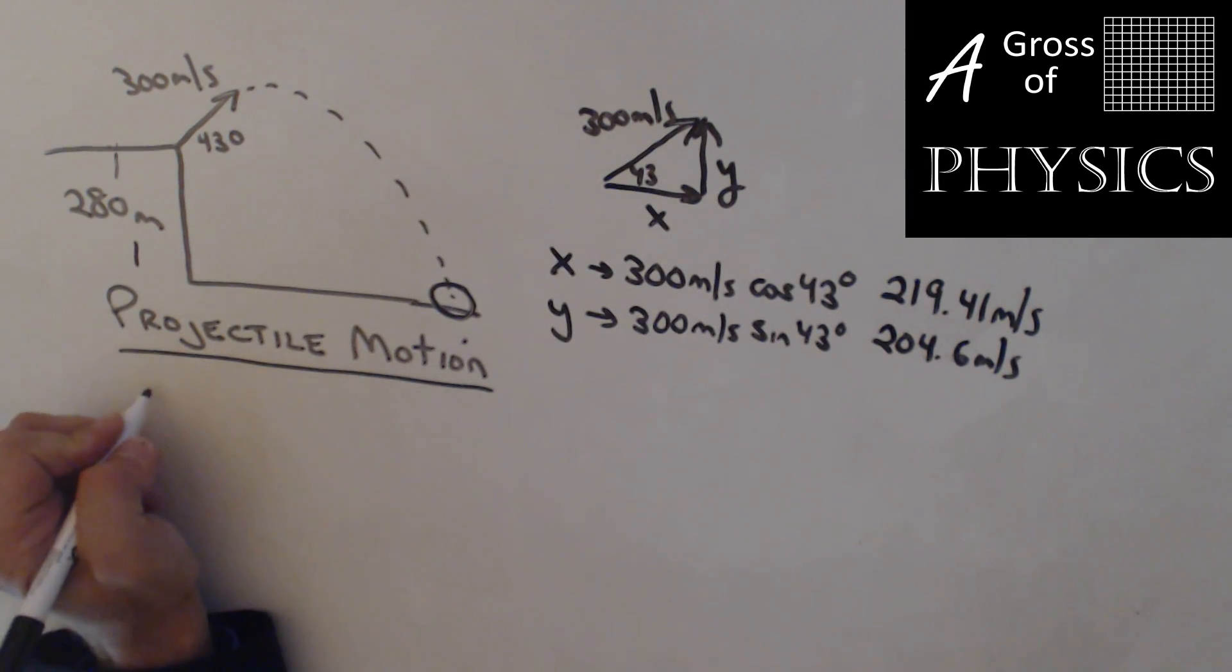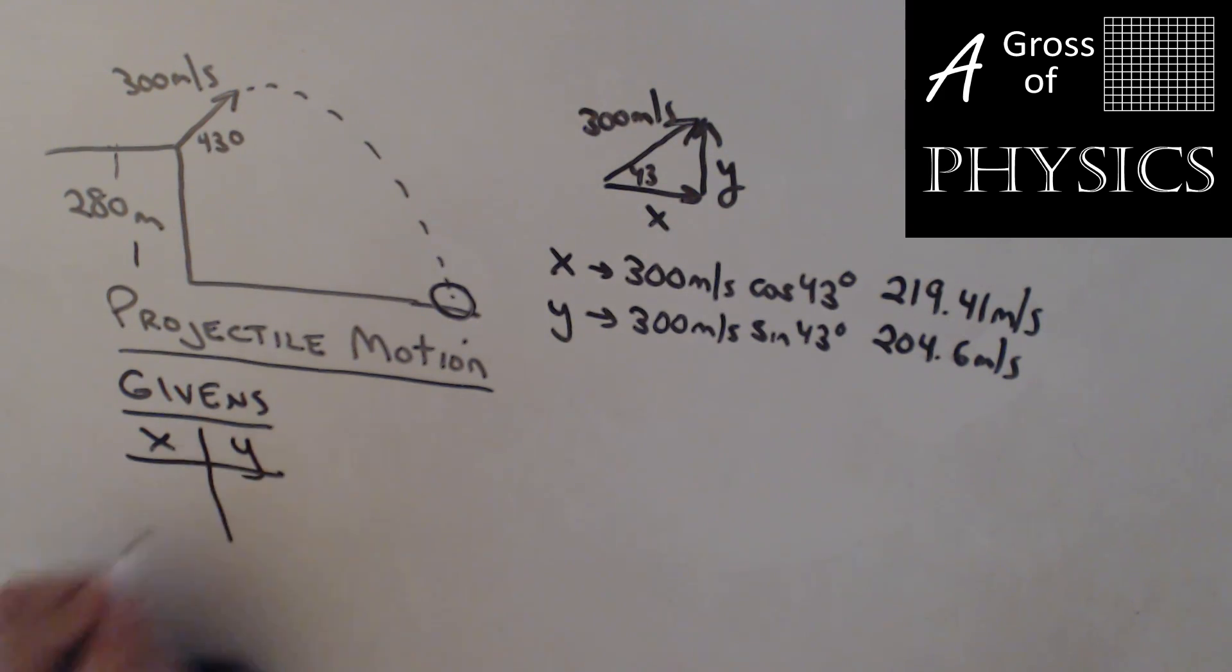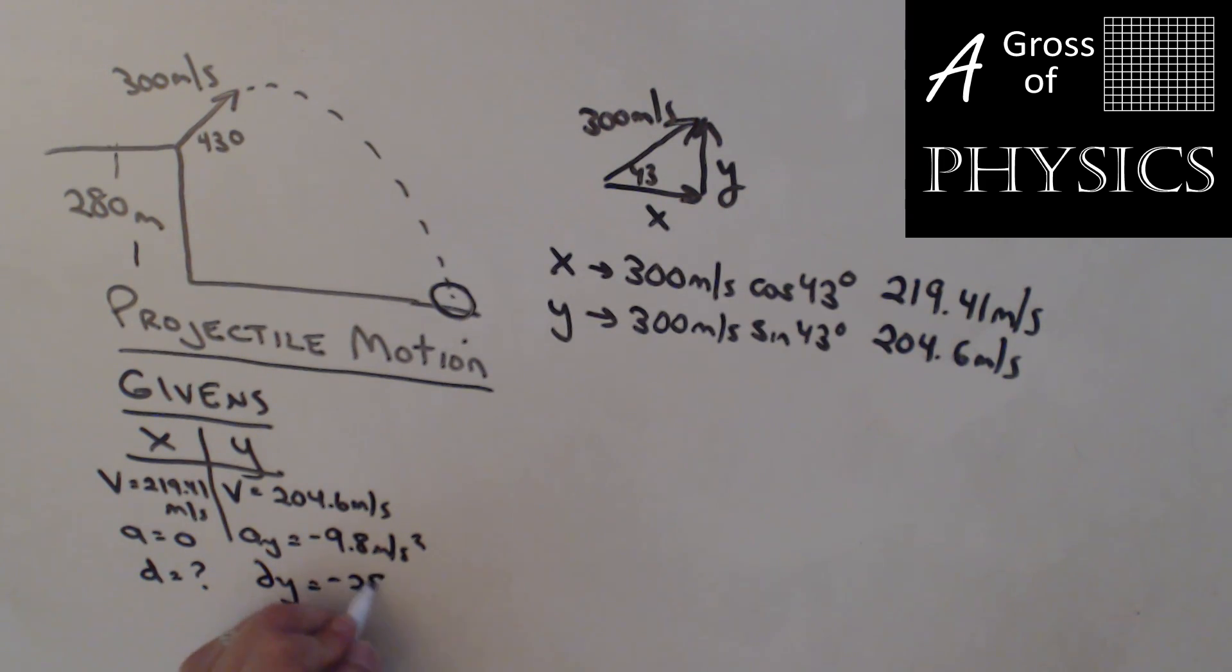If you remember back when we did projectile motion, what we had to do was make a givens list in both the x and the y direction. In the x, the v is 219.41 meters per second. In the y, the velocity is 204.6 meters per second. The acceleration in the x is zero. Acceleration in the y is negative 9.8 meters per second squared. The d in the y is negative 280 meters.